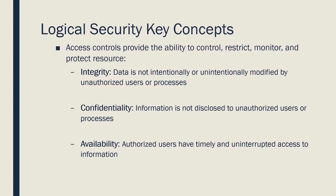And the third concept is availability. This refers to the protection of systems so that authorized users have timely and uninterrupted access to information. You want to protect systems from hackers that may take it offline and make it unavailable to users when they need it. For example, Amazon wants to have 100% uptime on its website so that it's always available to customers.